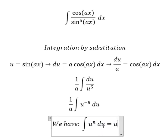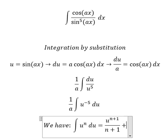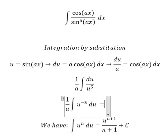So we have the power rule: u to the power of n plus 1 over n plus 1, and I will put c. Now we put negative 5 here, so negative 5 plus 1, we have negative 4.